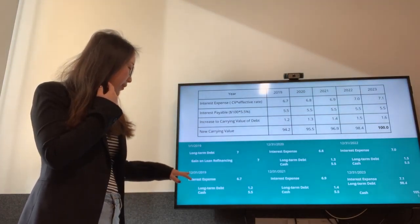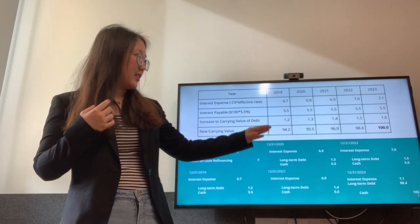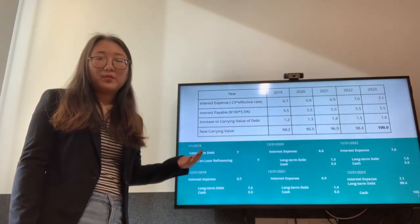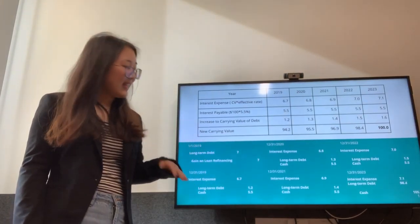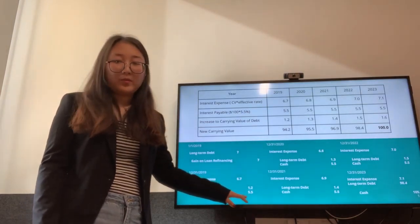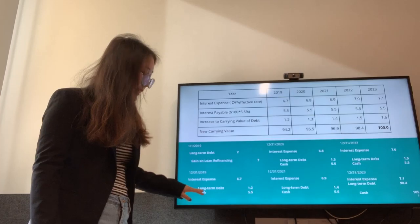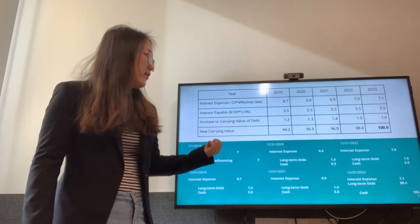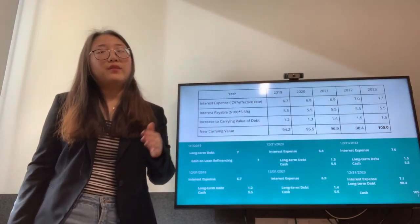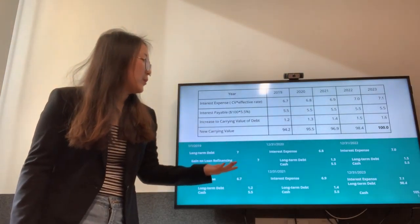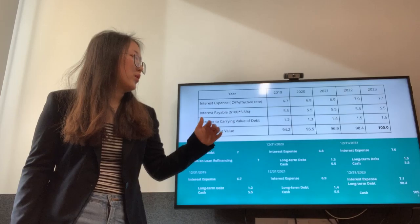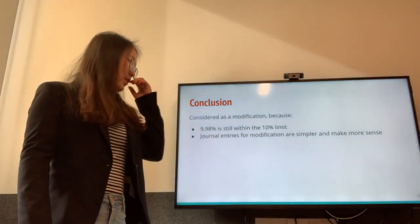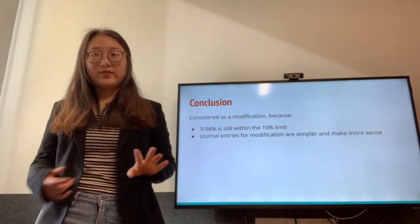From December 31st, 2019 through December 31st, 2022, we recognize interest expense using the carrying value multiplied by 7.22%, credit cash $5.5 million, and credit the difference to the carrying value of long-term debt. On the final year, 2023, the total cash paid is $105.5 million, interest expense is $7.1 million, and the remaining balance of $98.4 million is debited to long-term debt.